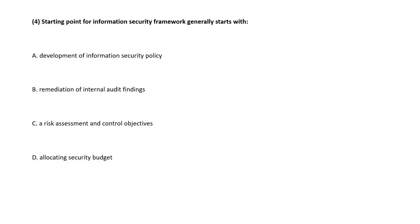The starting point for an information security framework generally starts with — as already discussed — the correct answer is option C: a risk assessment and control objectives.